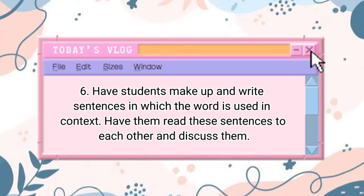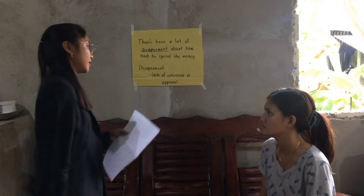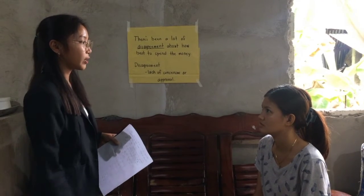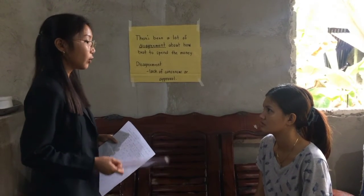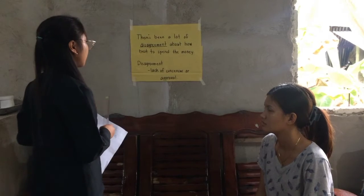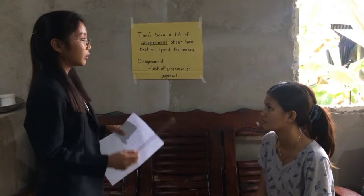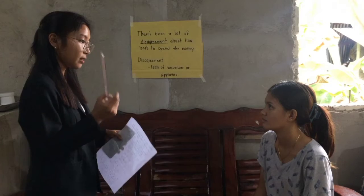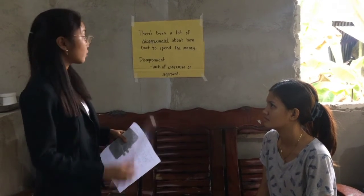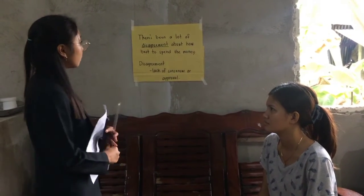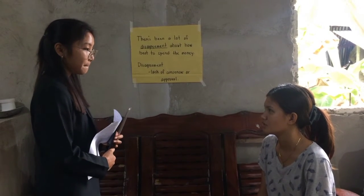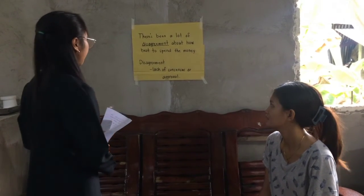Step six: Have students make up and write sentences in which the word is used in context. Have them read these sentences to each other and discuss them. I would like you to construct your own sentence using the word 'disagreement,' and I will call on you at the next meeting to present it to the class. Do you have any questions, Mishina? None so far. Very good.